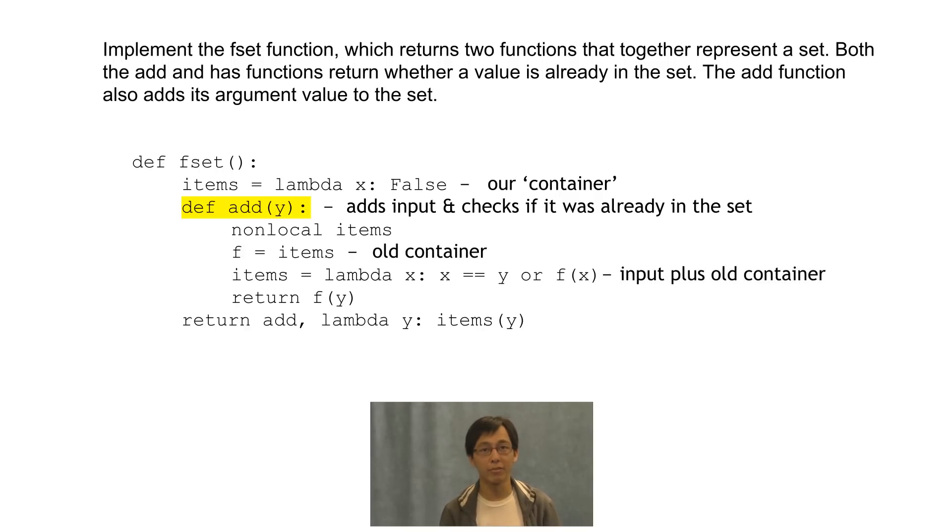So then why do we return f of y? Remember that add also returns if the value we're adding was already in the set. And since f contains all previous values, it'll contain all values that were already in the set. So we'll call f on our added value to check if it was already in the set.